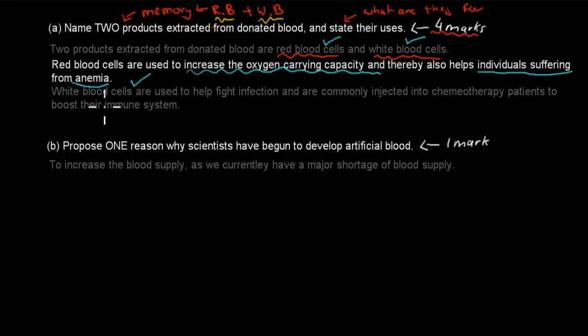And then we state the use for the other one. White blood cells are used to help fight infection and are commonly injected into chemotherapy patients to boost their immune system. This was the overall use, which was just to help fight infection. That's what we use white blood cells in our body for.